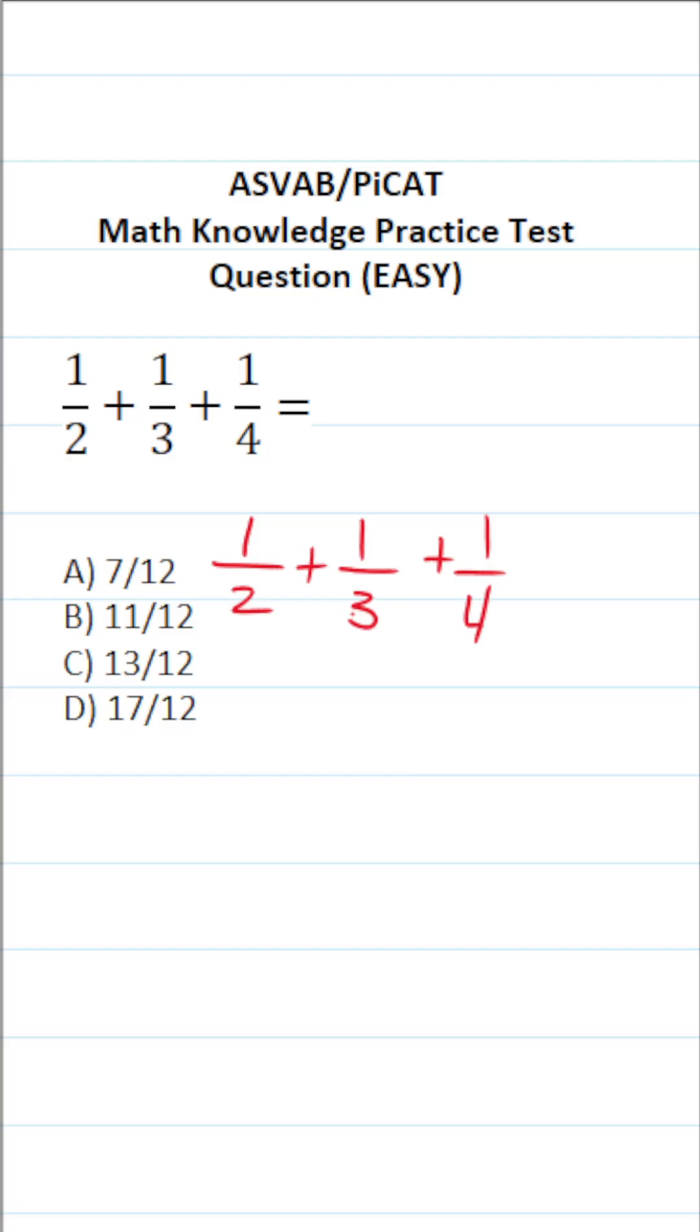Now, in order to add fractions, they have to have the same or a common denominator. In other words, we're looking for a number that both 2, 3, and 4 go into. And you should be able to do that mentally. 2, 3, and 4 all go into 12. So that's going to prompt us to rewrite all of these fractions with a common denominator of 12.